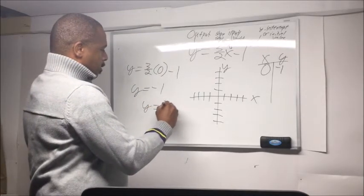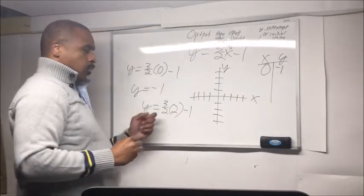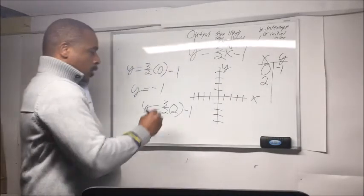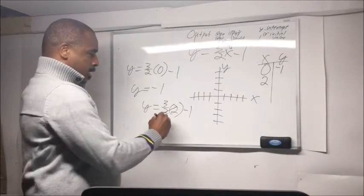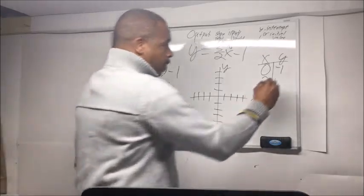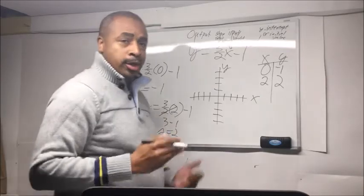So y equals 3 over 2 times 2 minus 1. When x equals 2, the 2 cancels out. 3 minus 1 is 2, so y equals 2. When x equals 2, y also equals 2.